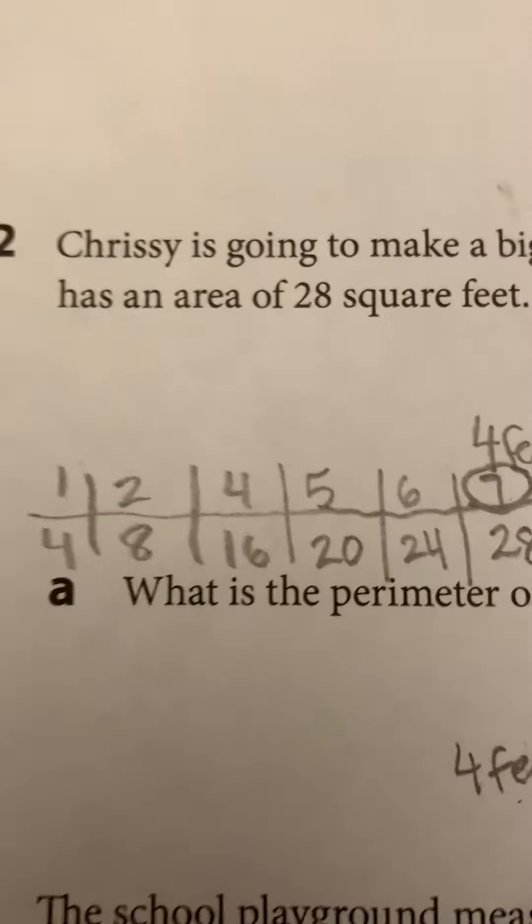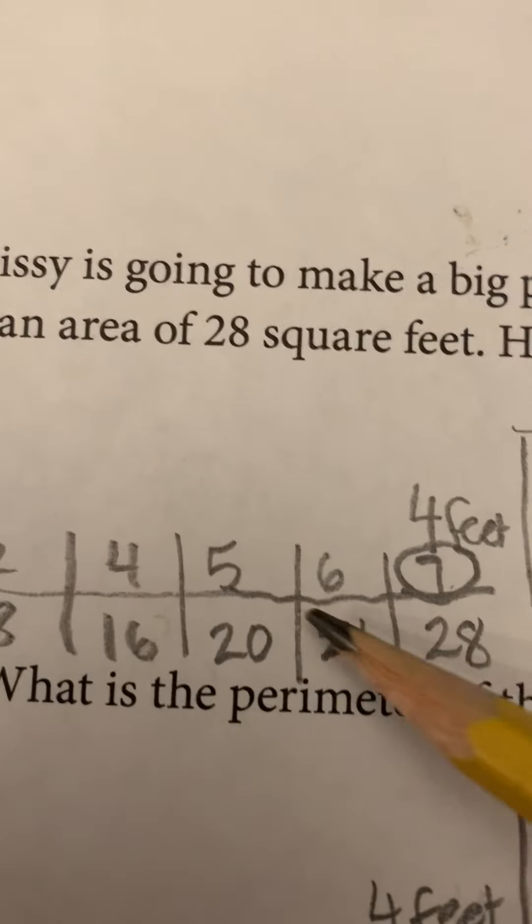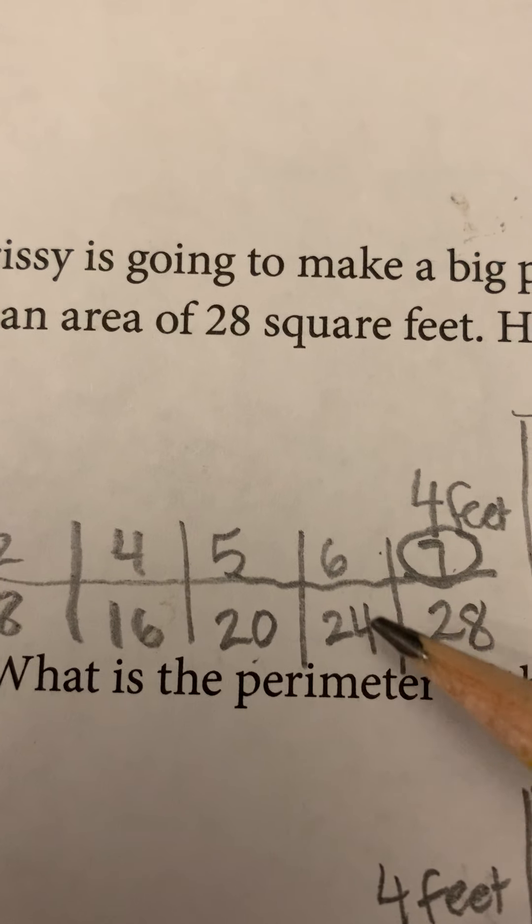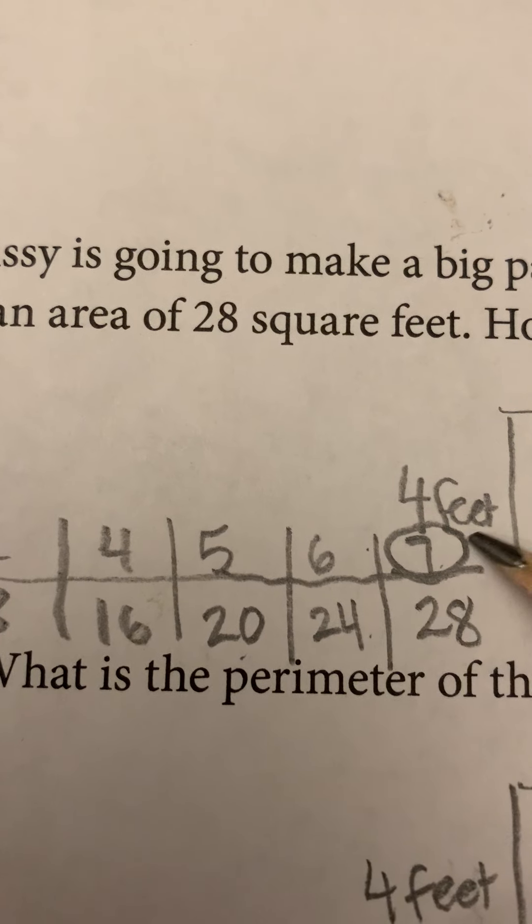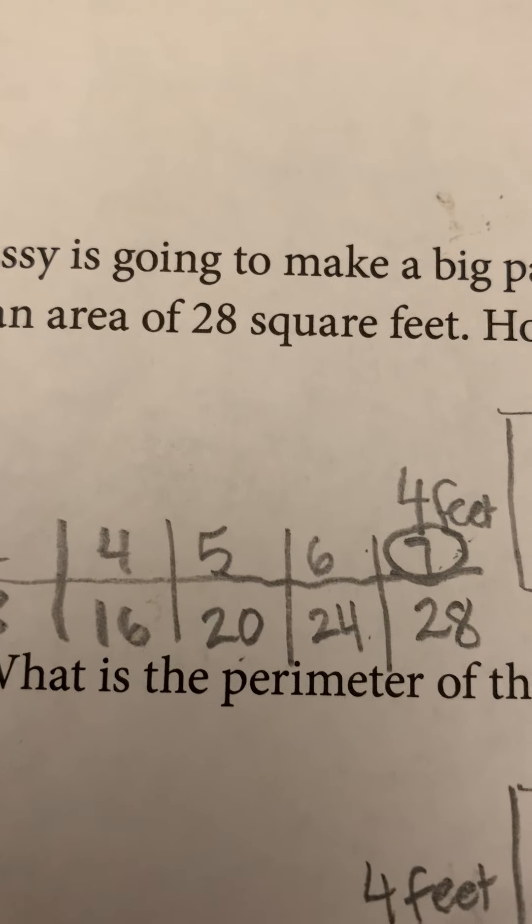Or I could have counted by fours. One four, two fours, double four, five fours is 20. Six fours is 24. Seven fours is 28. And then I get my answer of seven. Either way to get the answer is fine.